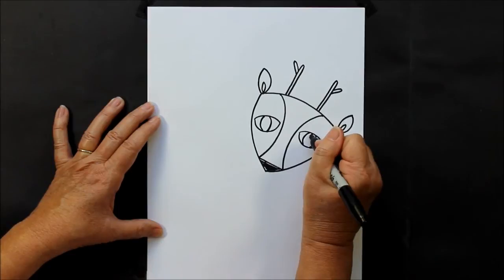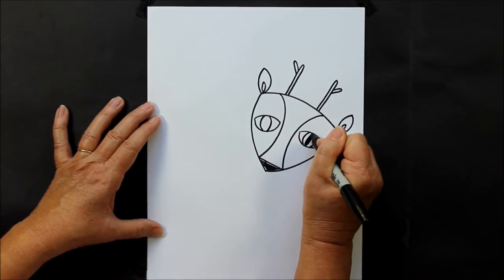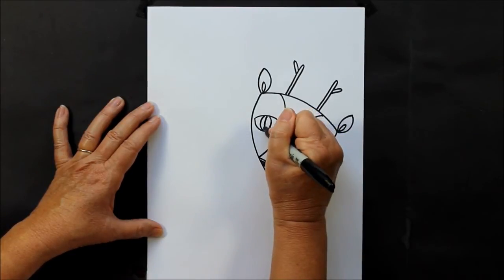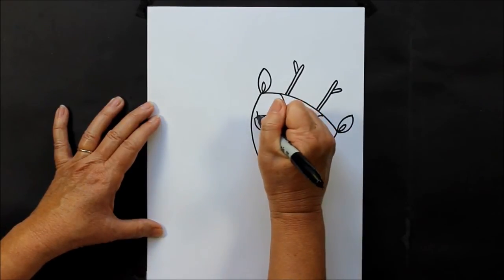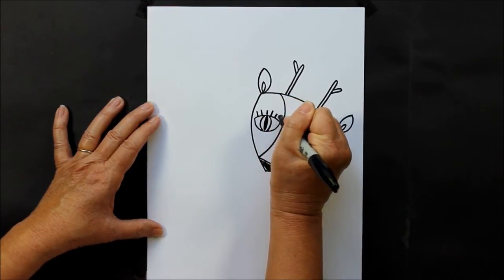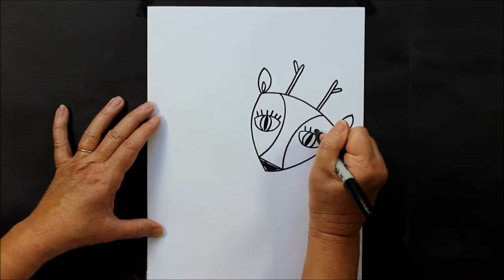And then right in the middle I'm going to put her pupil just like that. You can make it as big as you'd like to. I'd also like to put some little eyelashes on her. Those are just straight little lines.